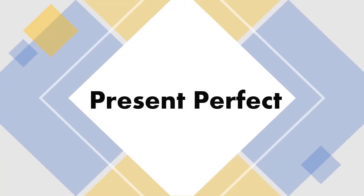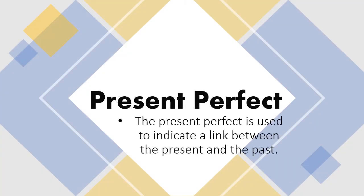Present perfect. Present perfect is used to indicate a link between present and the past. The time of the action is before now but not specified. And we are often more interested in the result than the action itself.